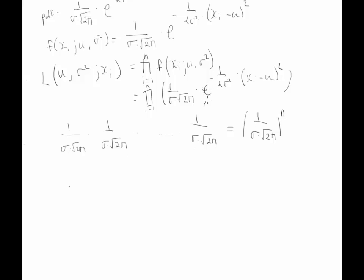Similarly for the exponential terms, we have e to the minus 1 over 2 sigma squared times xi minus mu squared, times e to the minus 1 over 2 sigma squared times x2 minus mu squared, and it goes all the way to xn. So this product just equals e to the minus 1 over 2 sigma squared times the sum from i equals 1 to n of xi minus mu squared.